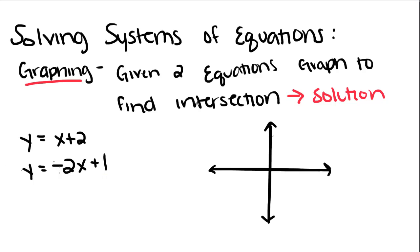So I have these two equations: y equals x plus 2, and y equals negative 2x plus 1.